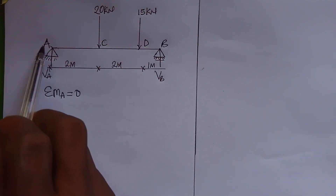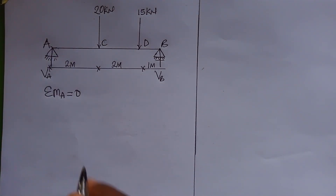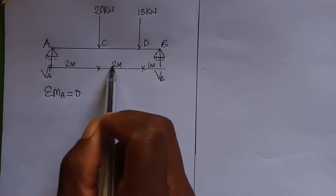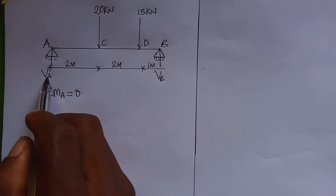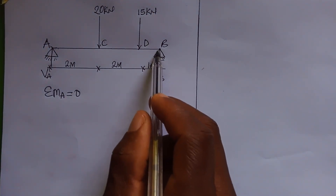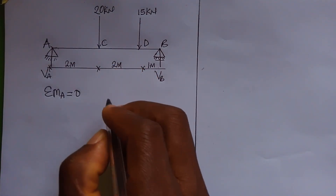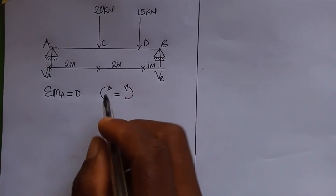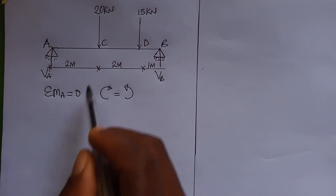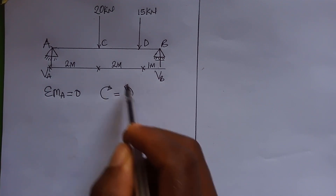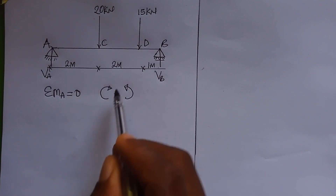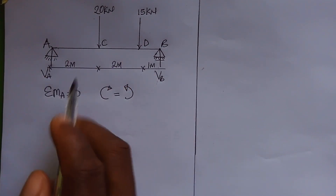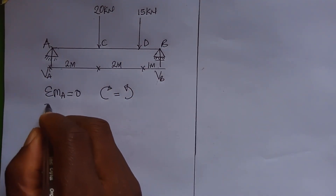VB will cover a distance of 5 meters to get to point A, and VB is going to move in an anti-clockwise direction. Let clockwise direction equal anti-clockwise direction — clockwise is like tightening a bolt, anti-clockwise is like loosening it. VB moves in anti-clockwise direction and covers a distance of 5 meters.